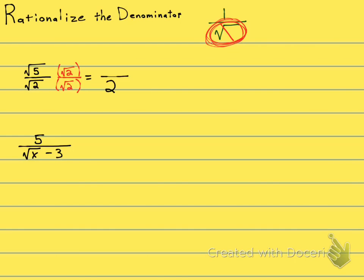Now let's see what happens to the numerator. The numerator is going to be square root of 5 times square root of 2, and that gives me the square root of 10, which cannot be simplified, and I'm done. I'm happy because now there's no more radical in the denominator.